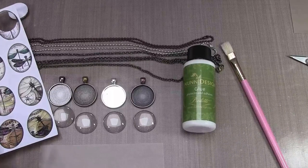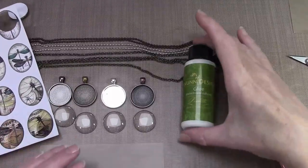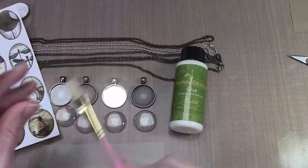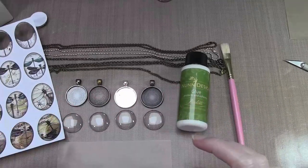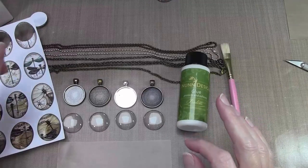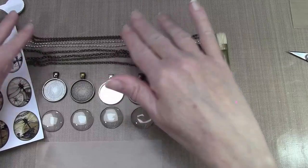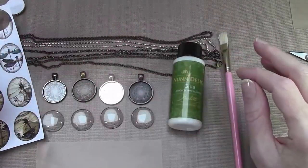The supplies you need are a digital collage image or photo of your choice, Nunn design glue, a paintbrush—any kind of paintbrush is fine to apply the glue—one inch clear glass domes or cabochons, one inch pendant trays, and then some sort of ball chain or the necklace of your choice to use for the pendant when you're done.